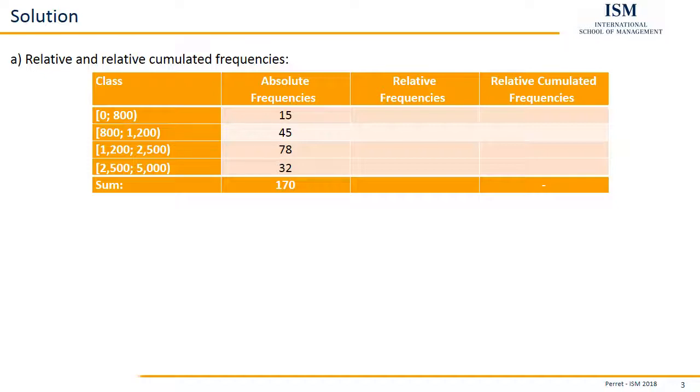So we go for the first one. It's 15 divided by 170, giving us 0.0882. Then 45 by 170, giving us 0.2647. Then 78 by 170, giving us 0.4588. And finally 32 by 170, giving us 0.1882.